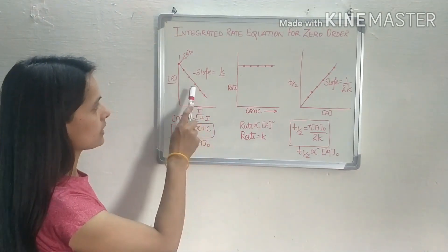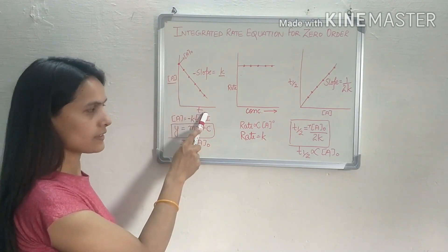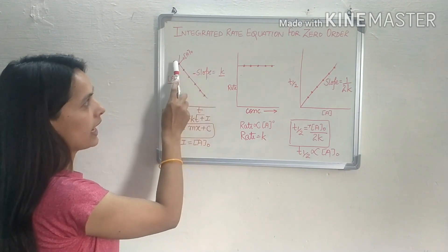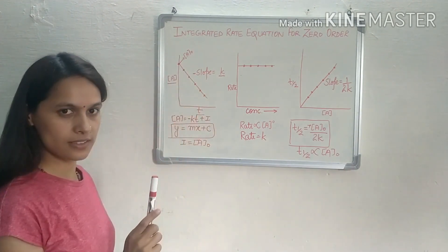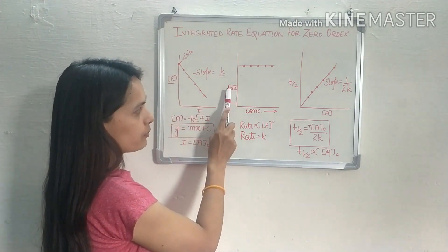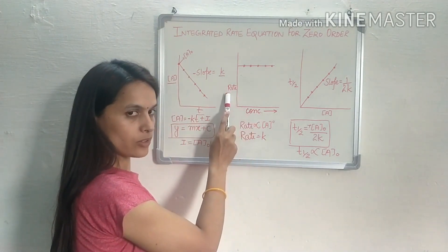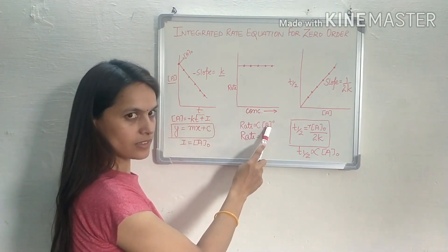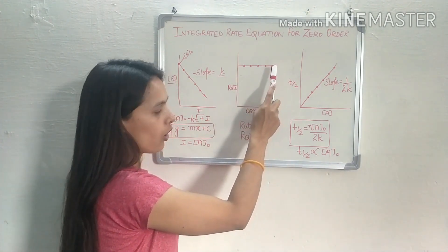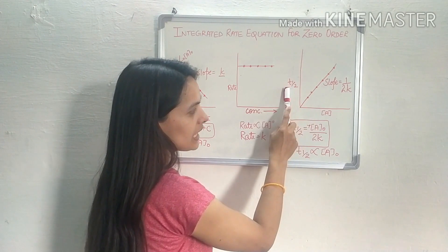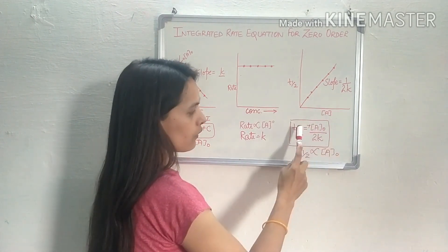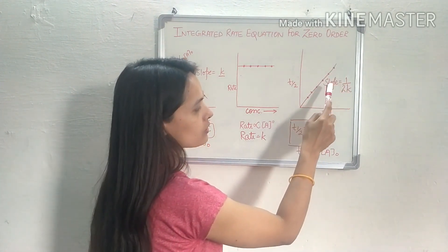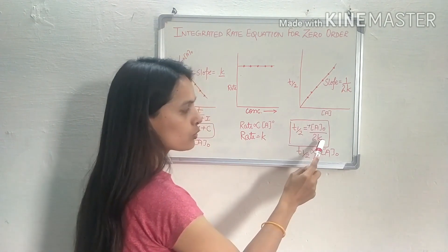So these three are the graphs used in zero order reactions. In the first graph, concentration of A is plotted against t — we get a downward graph where the slope gives minus k and the intercept is the initial concentration. The second is the graph between rate and concentration — because rate is independent of concentration, we get a linear horizontal graph. The third graph is between t½ and concentration, where t½ and concentration are directly related, giving a straight line with slope 1/(2k).